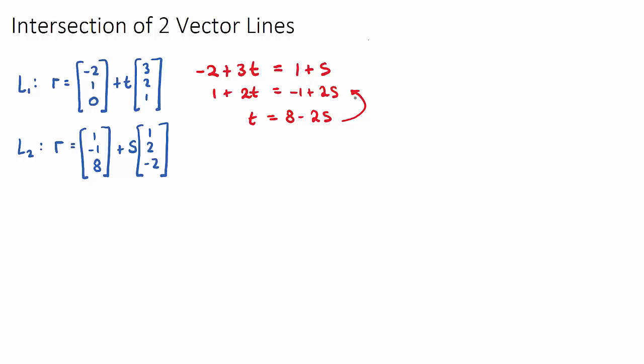So if I do that, I'm going to have 1 plus 2 times, and I'm not going to write t. I'm going to replace t with 8 minus 2s. The reason why I've done that is because once I put the right-hand side of this equation, I'll realize I now have an equation that only has the one variable, and I can solve for s.